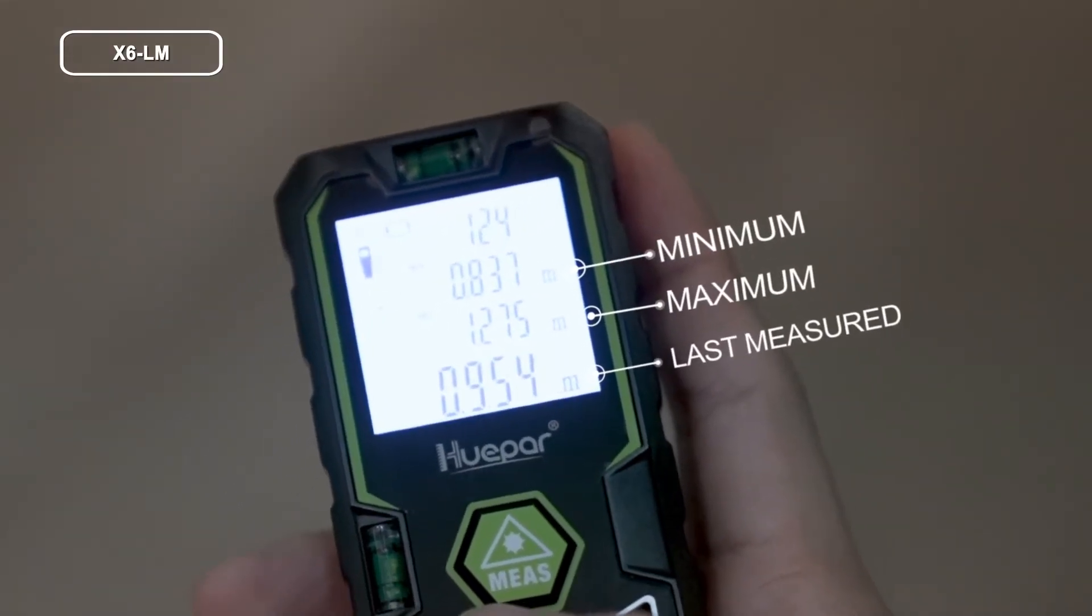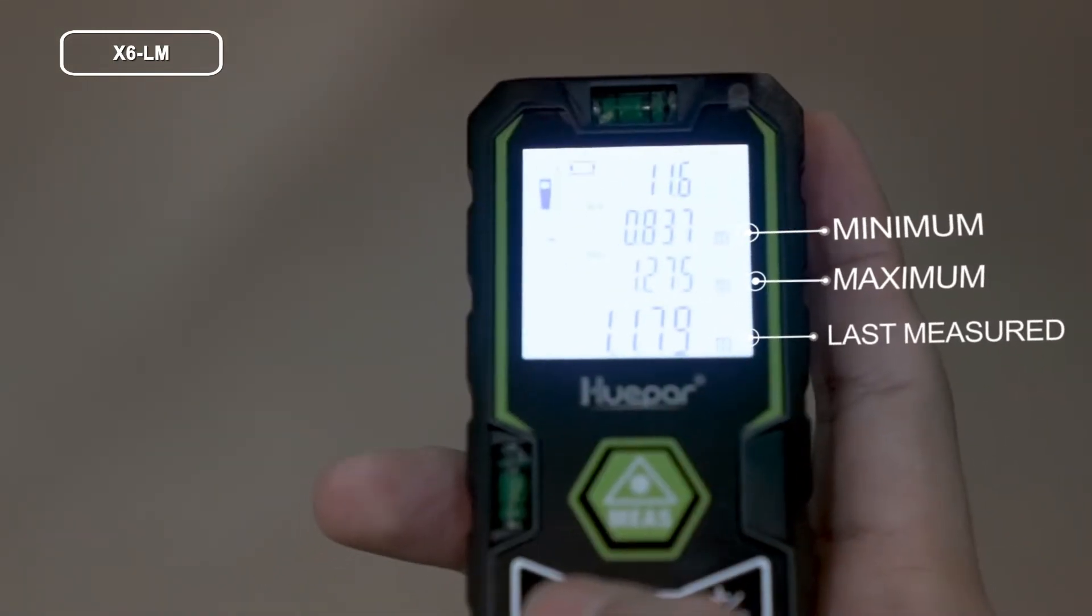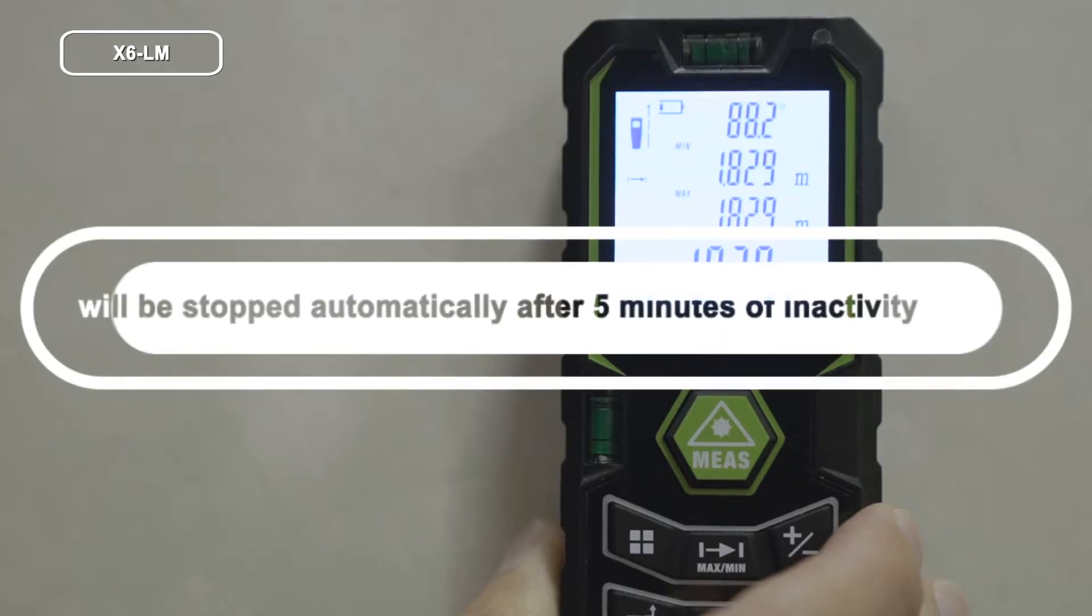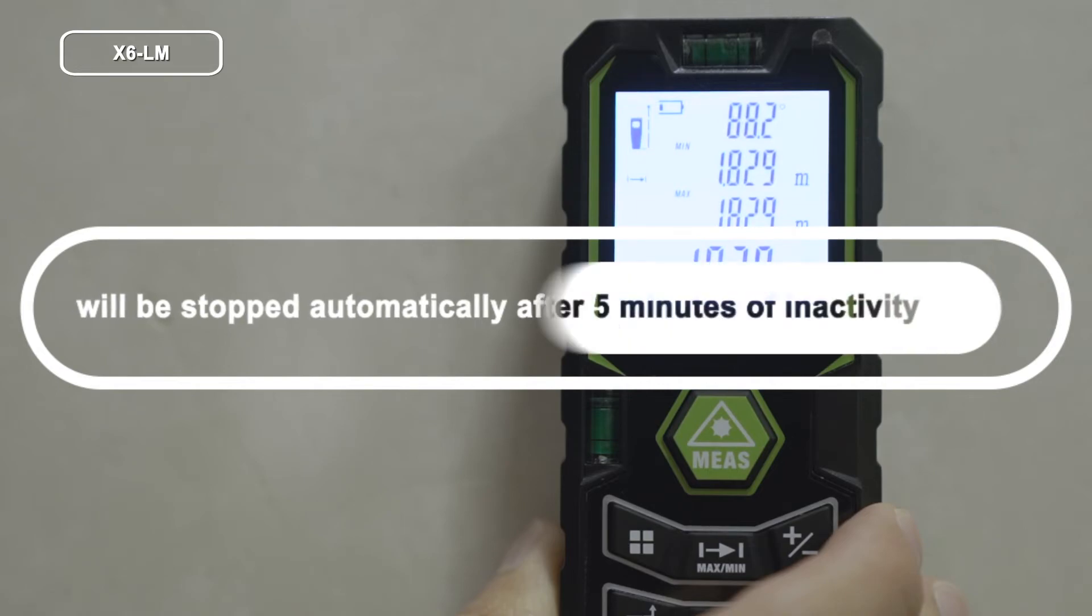The last measured value is displayed in the summary line. This function will be stopped automatically after 5 minutes of inactivity.